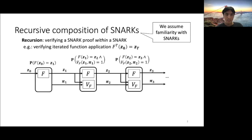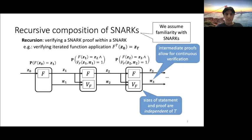And this has a number of very desirable properties. For example, the size of every statement you prove is independent of the number of times you apply the function. And similarly, the proof size is independent of the number of times you apply the function. And you can verify every intermediate proof. So if you have a computation that goes on forever, you can verify the latest state. And also, you can have different people create proofs for different transitions in here.